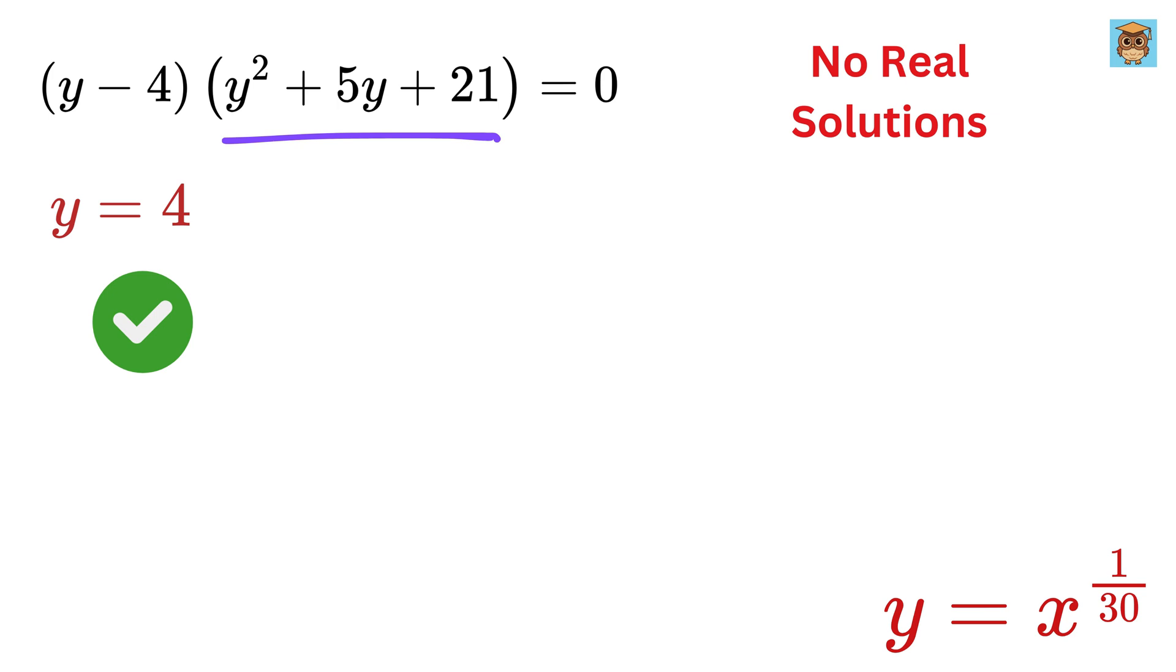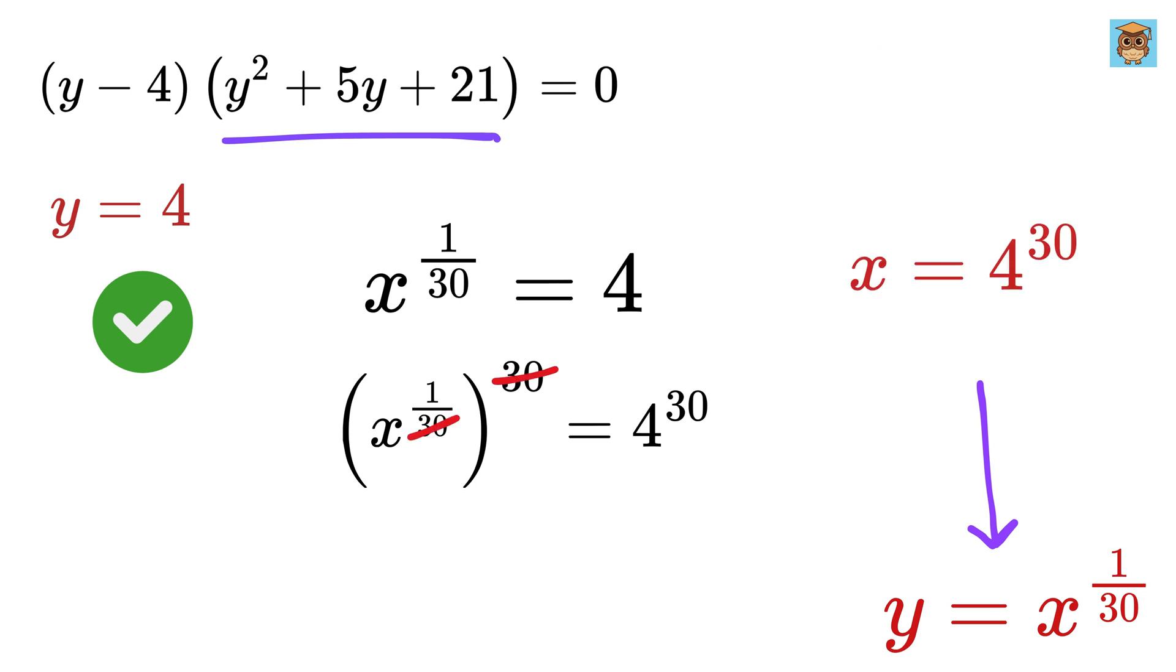This means the only real solution to our original equation is y equals 4. Since we earlier defined y as x raised to 1 over 30, we now know that x raised to 1 over 30 equals 4. To find x, we raise both sides to the power of 30, giving us x equals 4 raised to 30.